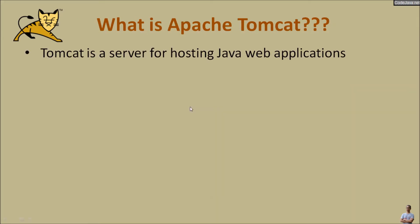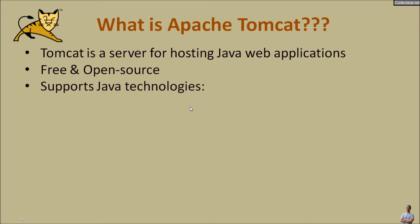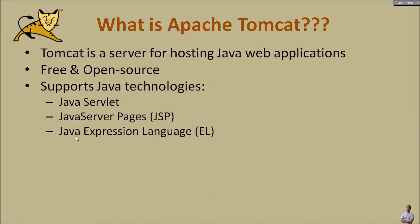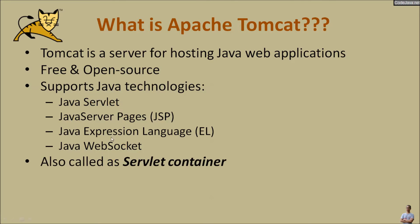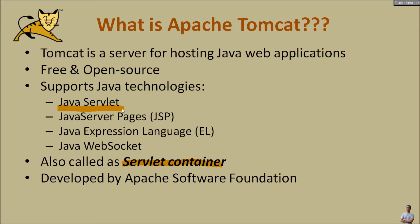What is Apache Tomcat server? Tomcat is a very popular server for hosting Java web applications. It is free and open source. Tomcat supports the following Java technologies: Java Servlet, Java Server Pages, Java Expression Language, and Java WebSocket. Those technologies are under Java EE, Java Enterprise Edition, for developing enterprise and web applications. Tomcat is also called a servlet container because it supports Java Servlet. Tomcat is developed by Apache Software Foundation, and its homepage is tomcat.apache.org.